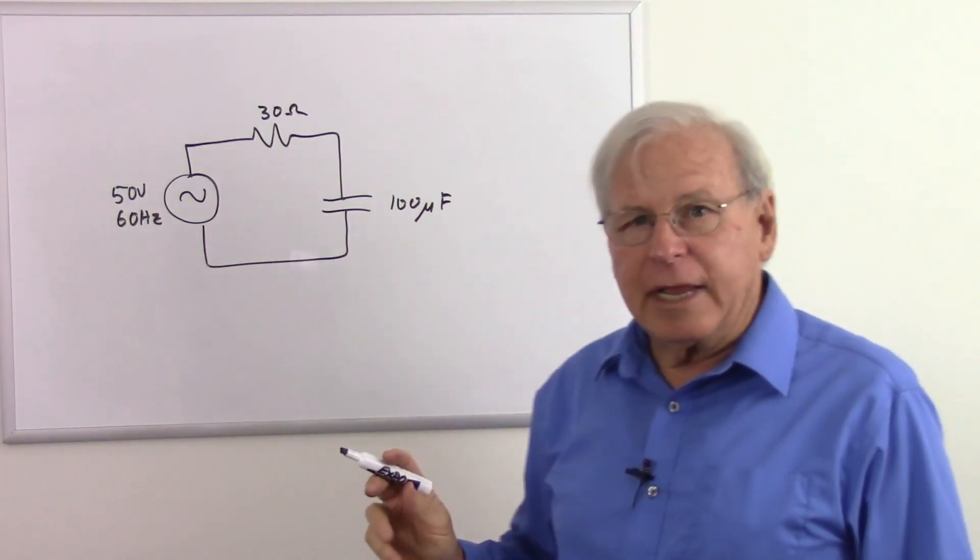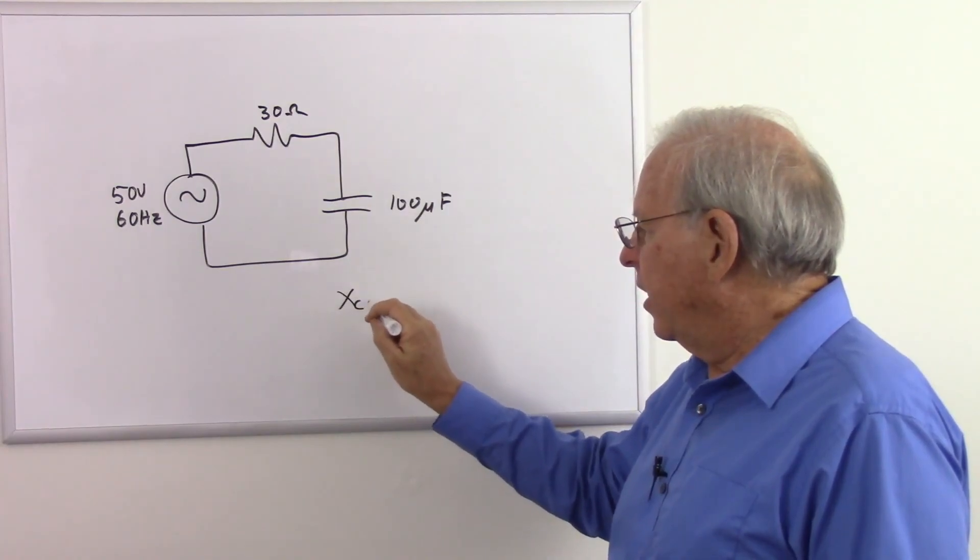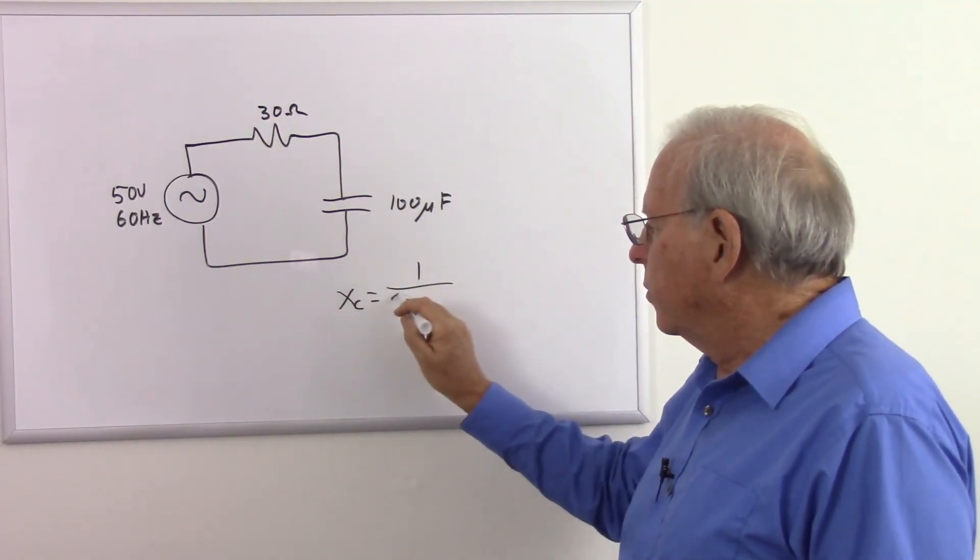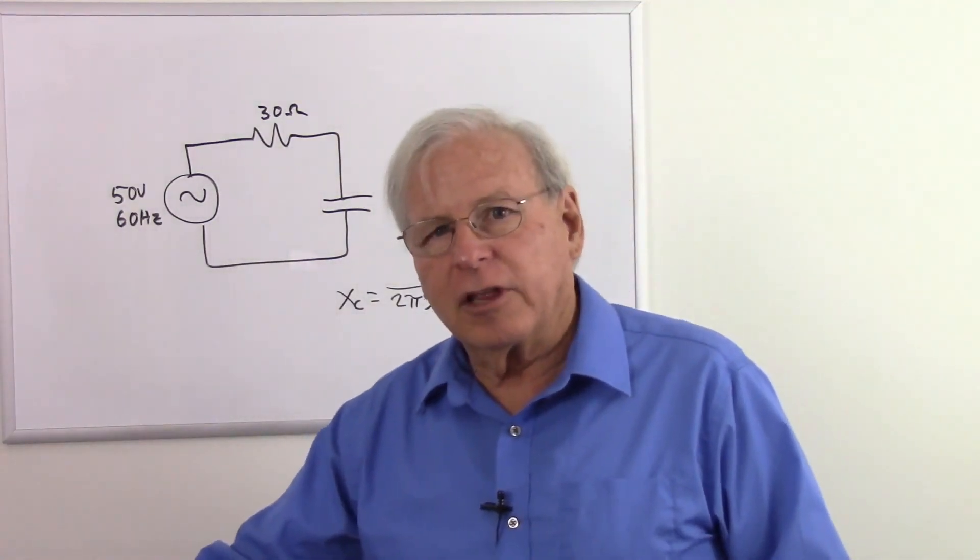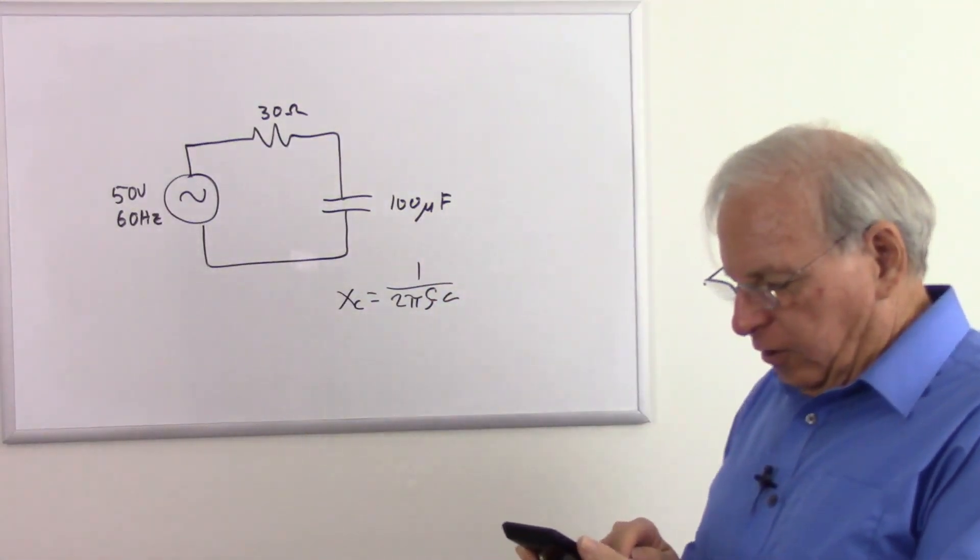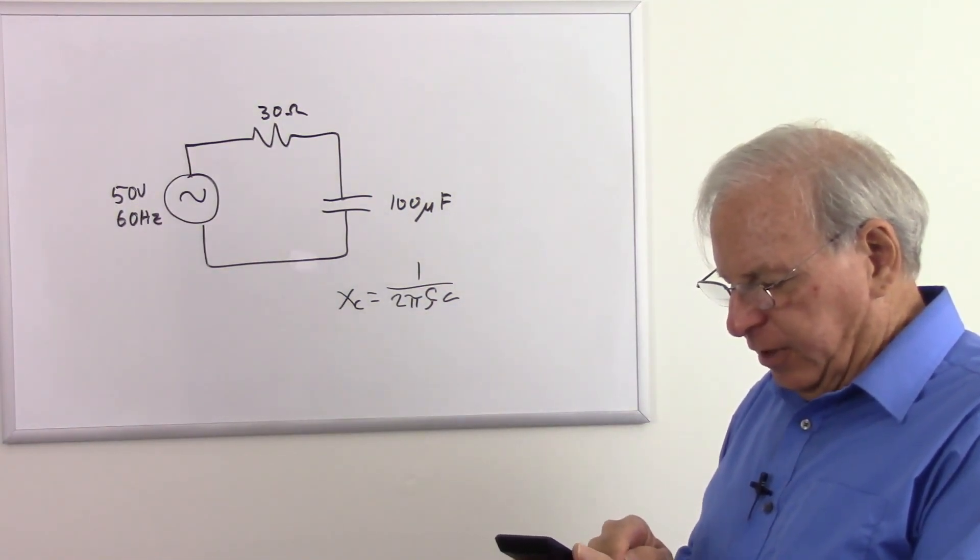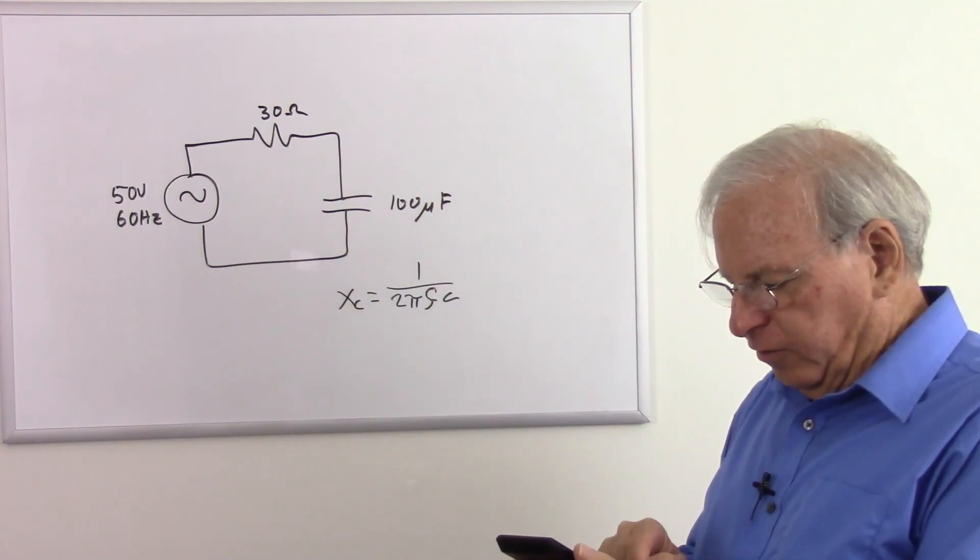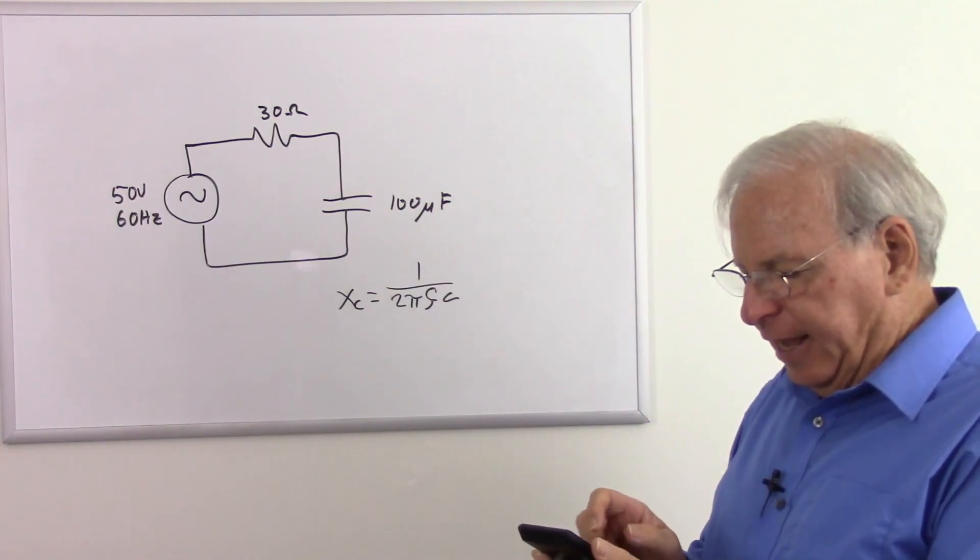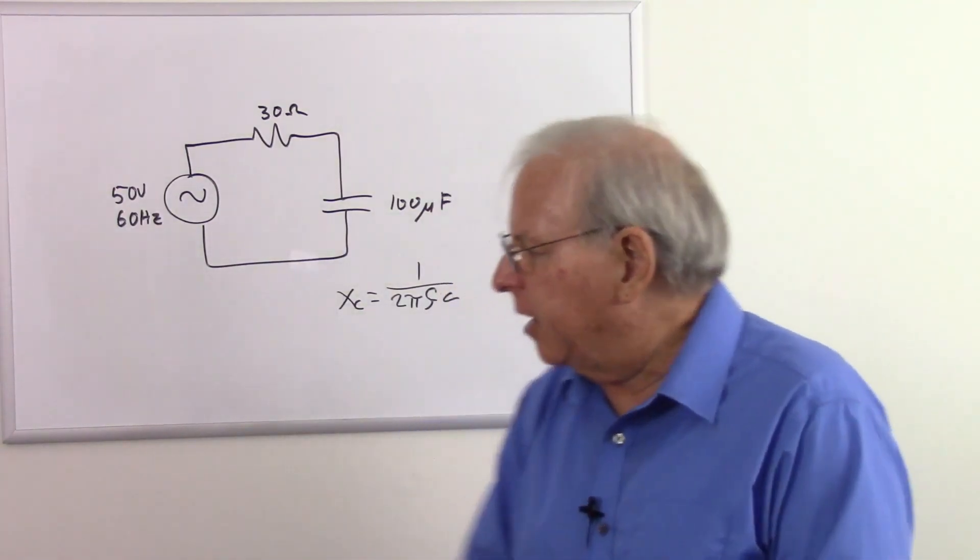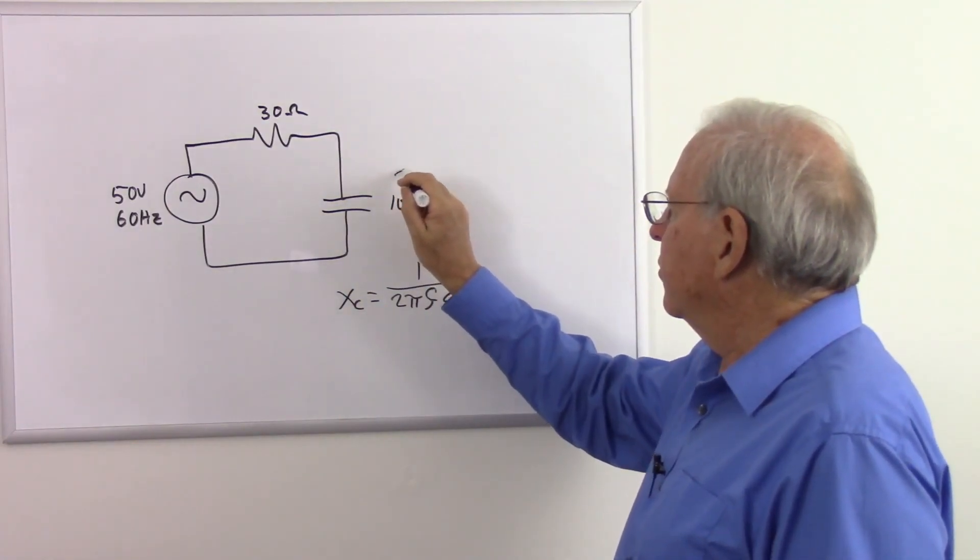Now what I need to do is find out what the capacitive reactance of this is. Simple formula, x sub c equals 1 over 2 pi fc. So let's pull out my trusty calculator and calculate that out. So 6.28 times 60 times .0001 equals, and then I take the reciprocal of that, and I get 26.53 ohms for the reactance of this capacitor.